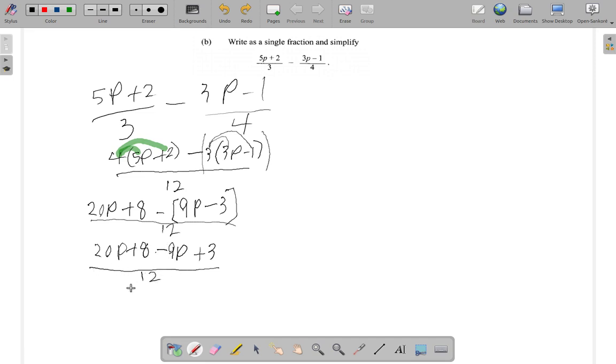Now at the top, put the P's together and the numbers together. 20P minus 9P, numbers plus 8 plus 3, all over 12. Let me separate this part, continue here. 20P minus 9P that will give you 11P.